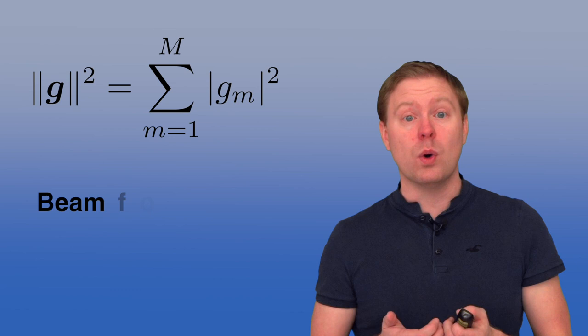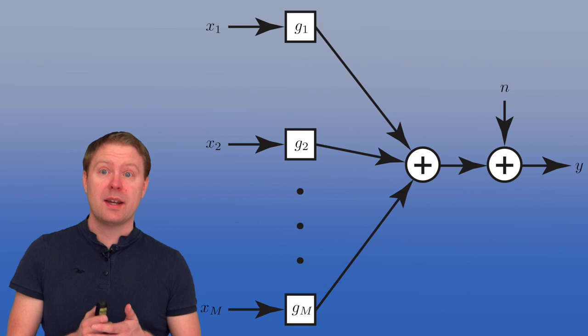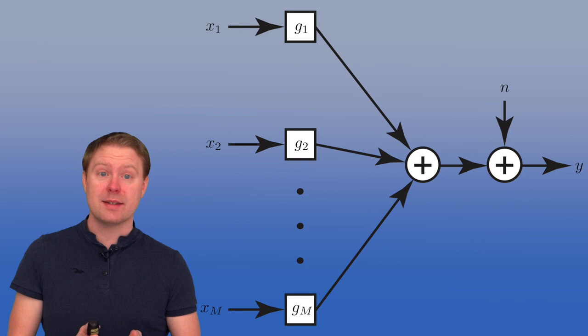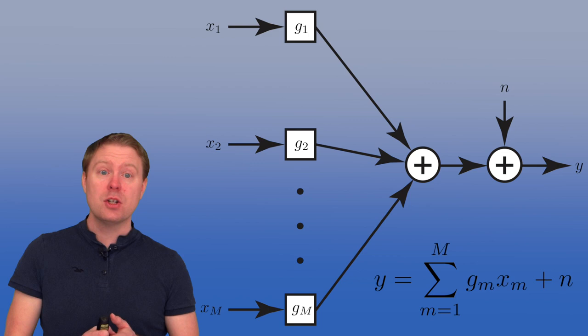We will now shift focus to the MISO case. We have M multiple transmit antennas and one receive antenna. For each transmit antenna we send a different signal: X1 from the first antenna, X2 from the second, and XM from antenna M. Each signal is multiplied by the respective channel response — G1, G2, through GM — and all contributions are added together over the wireless channel. Adding one noise term N at the receiver gives us the received signal Y.